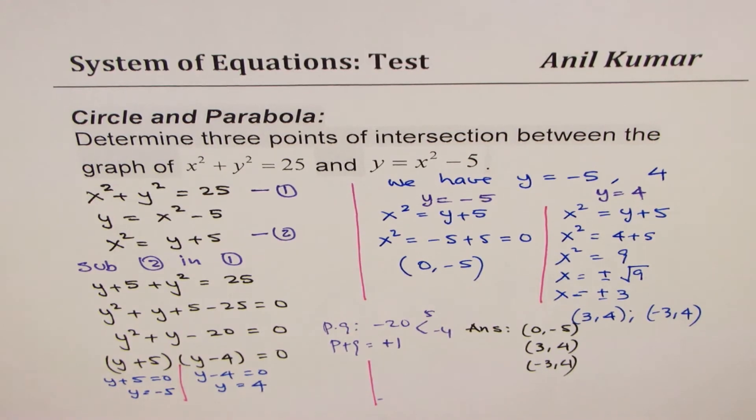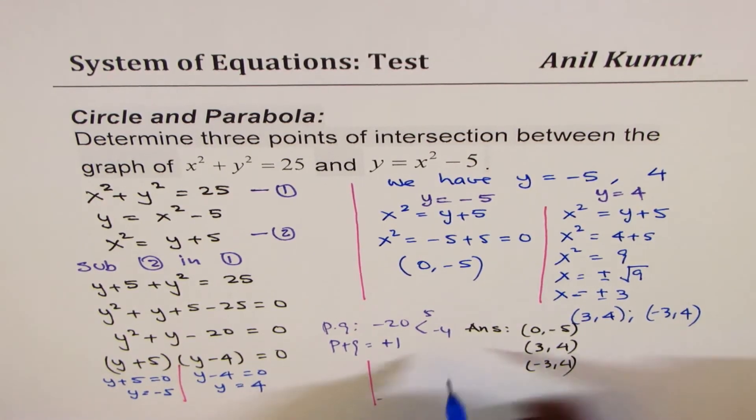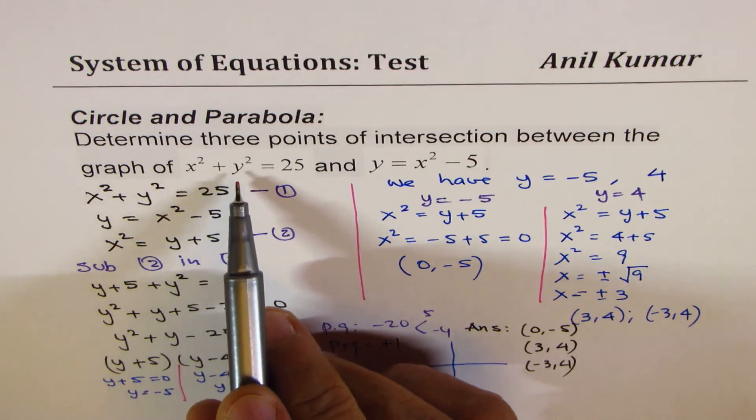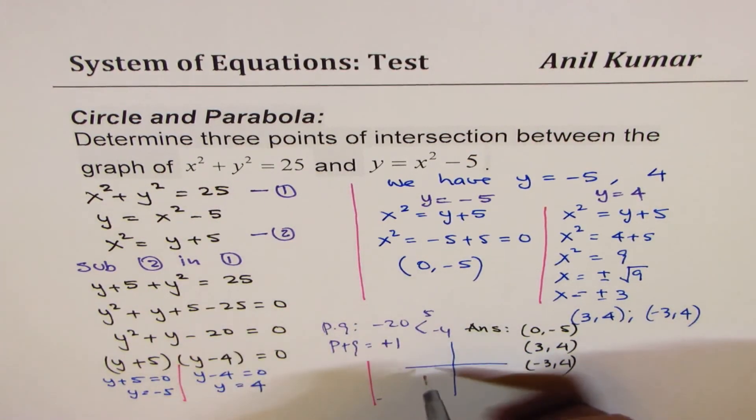To give you a picture as to how it should look like, if you actually sketch it, we have a parabola and a circle. So the circle here is x squared plus y squared with the center at 0, something like this.